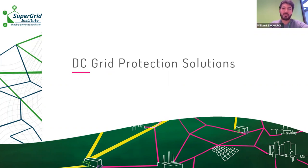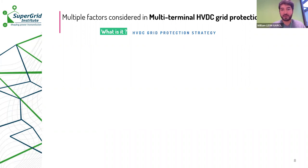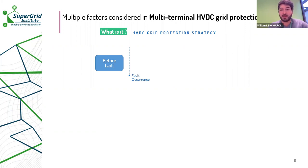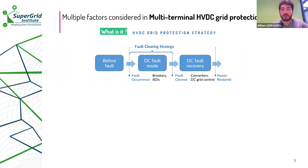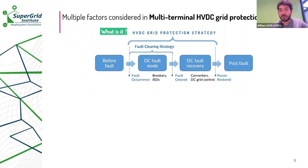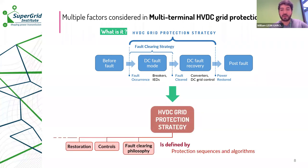How do we design protection for MTDC systems? When a fault occurs in an HVDC system, the first step is to clear the fault using intelligent electronic devices called IEDs and DC breakers — this is called the fault clearing strategy. Once the fault has been cleared, it is important to restore the grid voltage and power through the MTDC converters via coordination and recovery actions. After the fault, we find a new operating condition with one element less — the faulty element now isolated. The grid protection strategy encompasses both fault clearing and recovery actions, defined by sequences and algorithms run in relays.